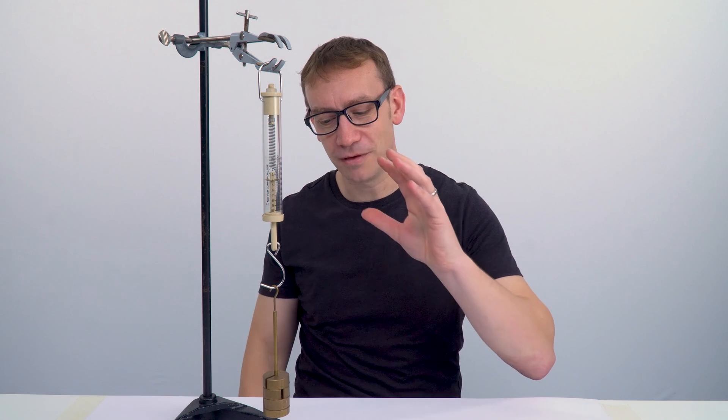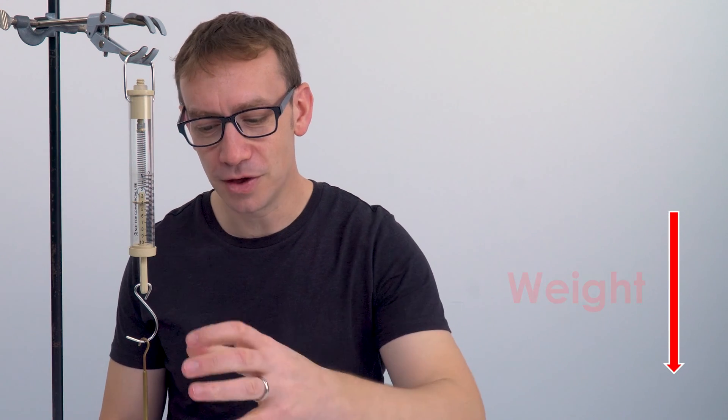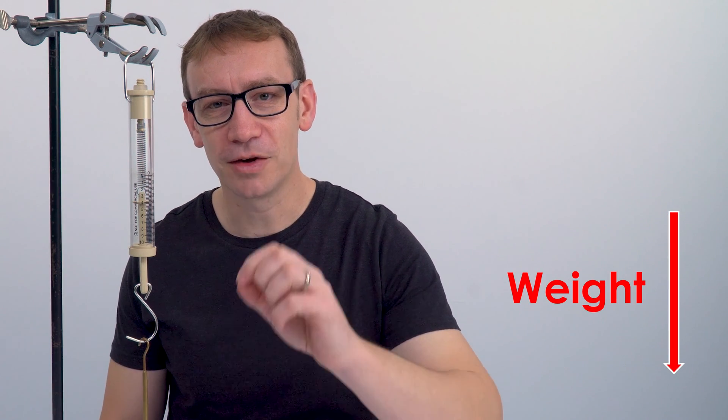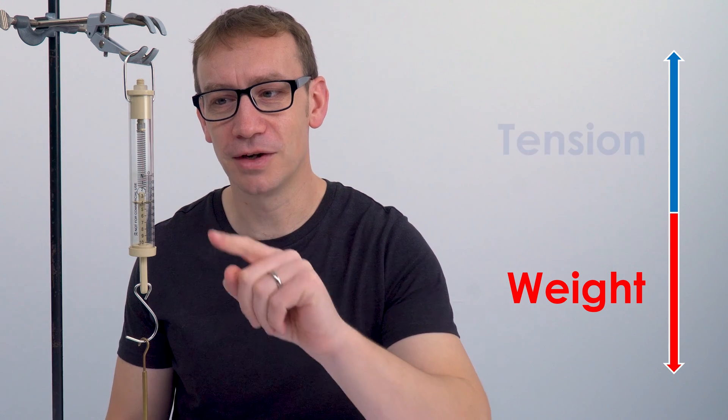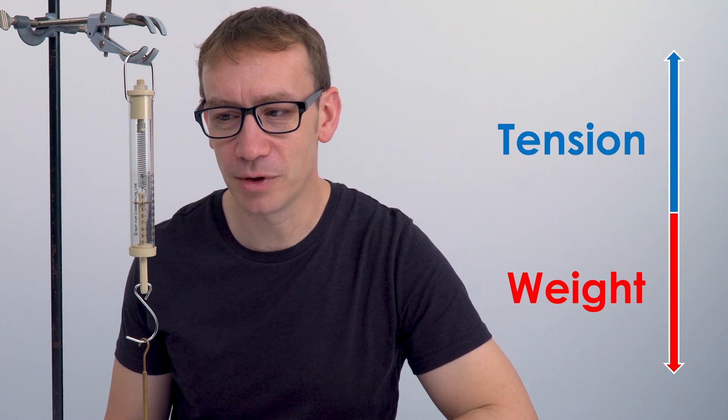Now at this point we have something which is in equilibrium. There's no movement and that means we have balanced forces and here the force acting down due to the weight of this mass is going to be equal in size but in an opposite direction to the tension in that spring.